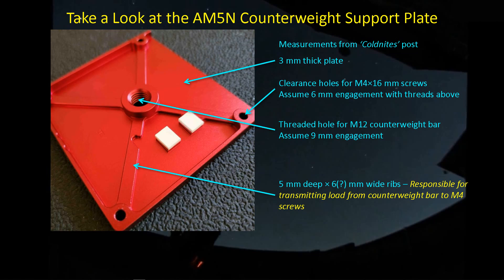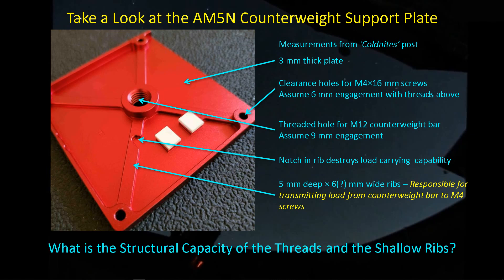So these ribs play a very important structural role, and yet when you look at this particular rib, they've clearly cut out a little notch here. Intentionally, this notch effectively destroys the load carrying capability of this rib, causing more load to go out to the other three ribs. So now we need to take a look at the structural capacity of the threads and of this plate rib structure, because it all has to work together to get the load out of the counterweight bar and safely into the mount body.